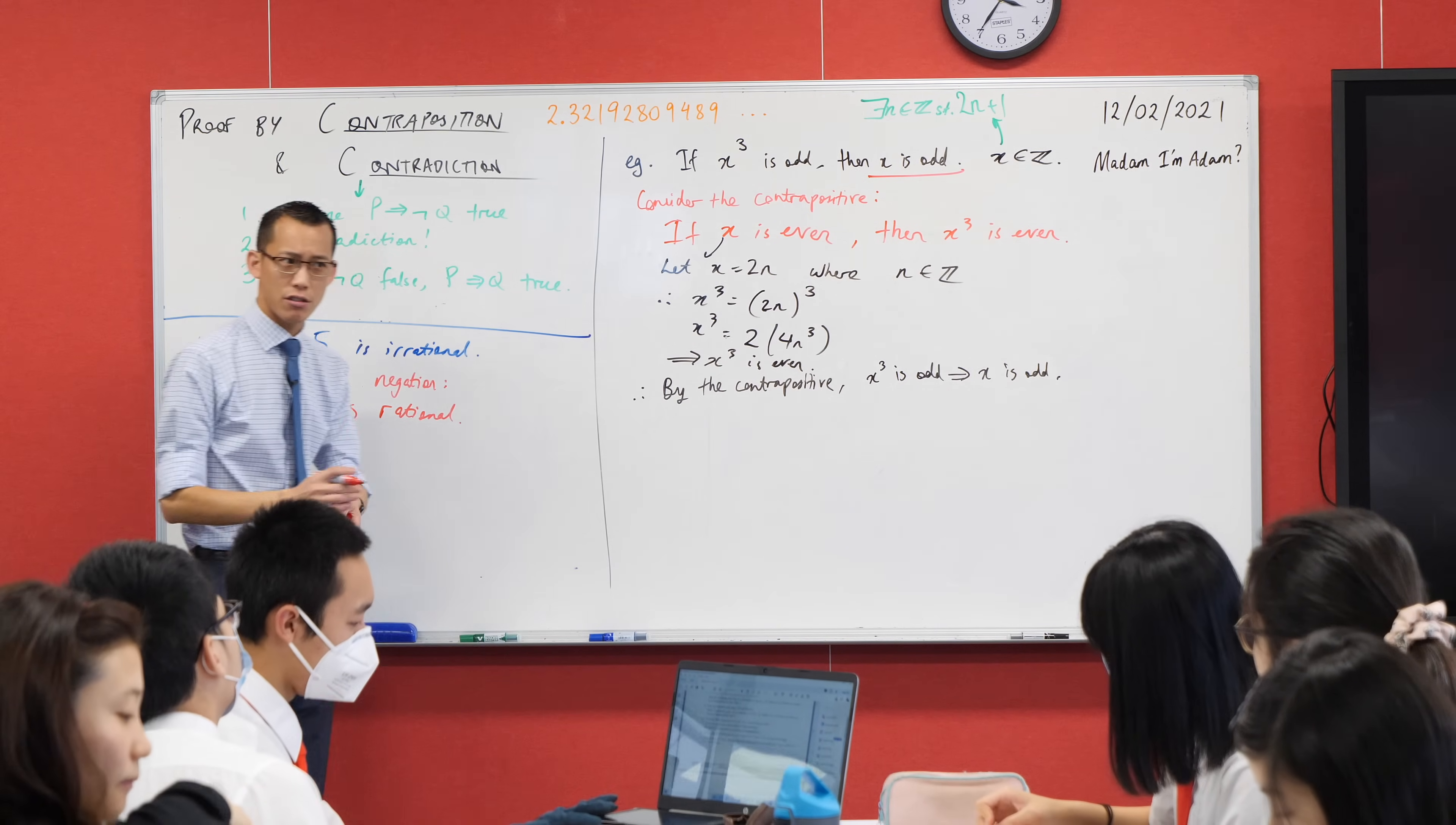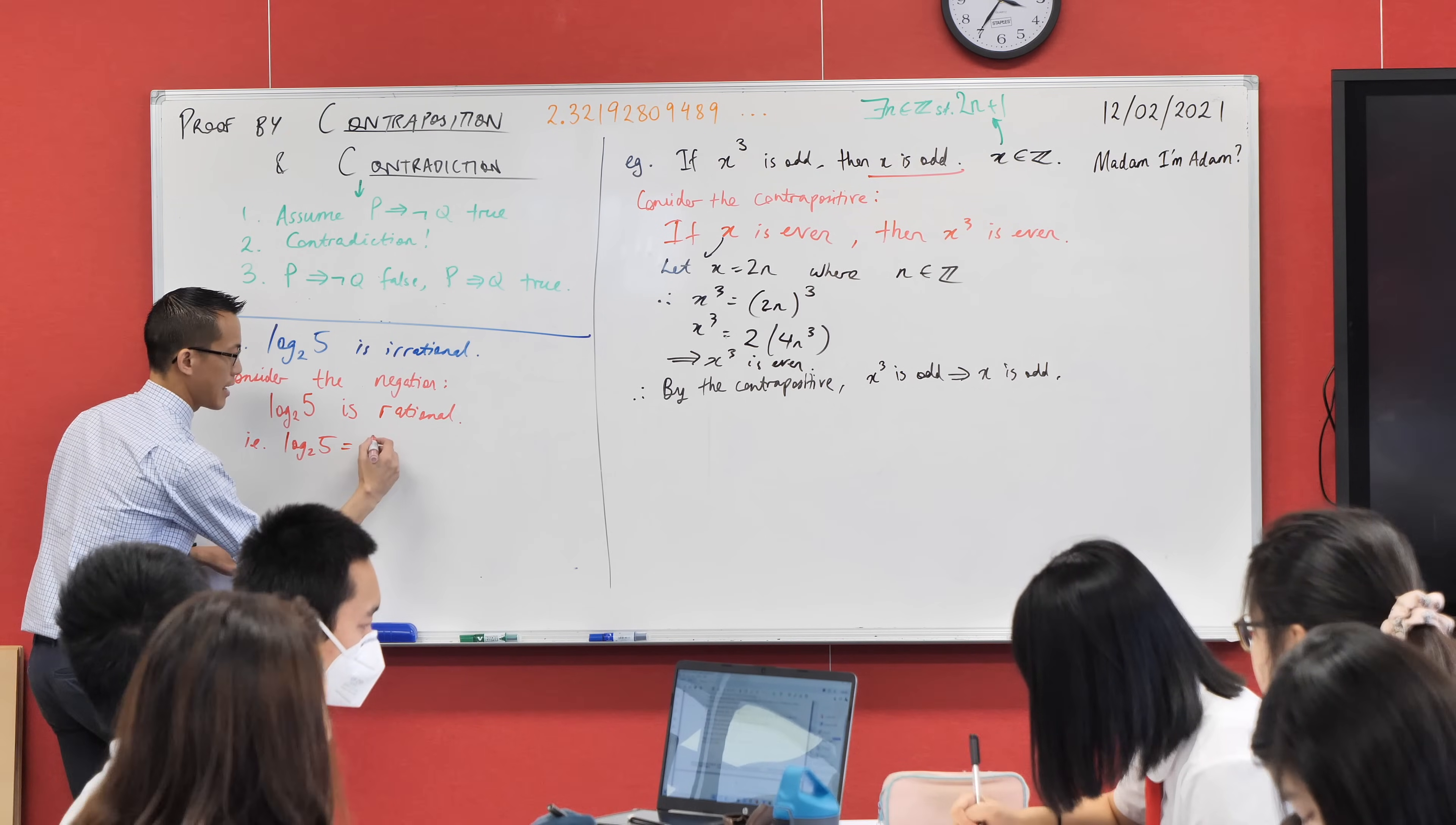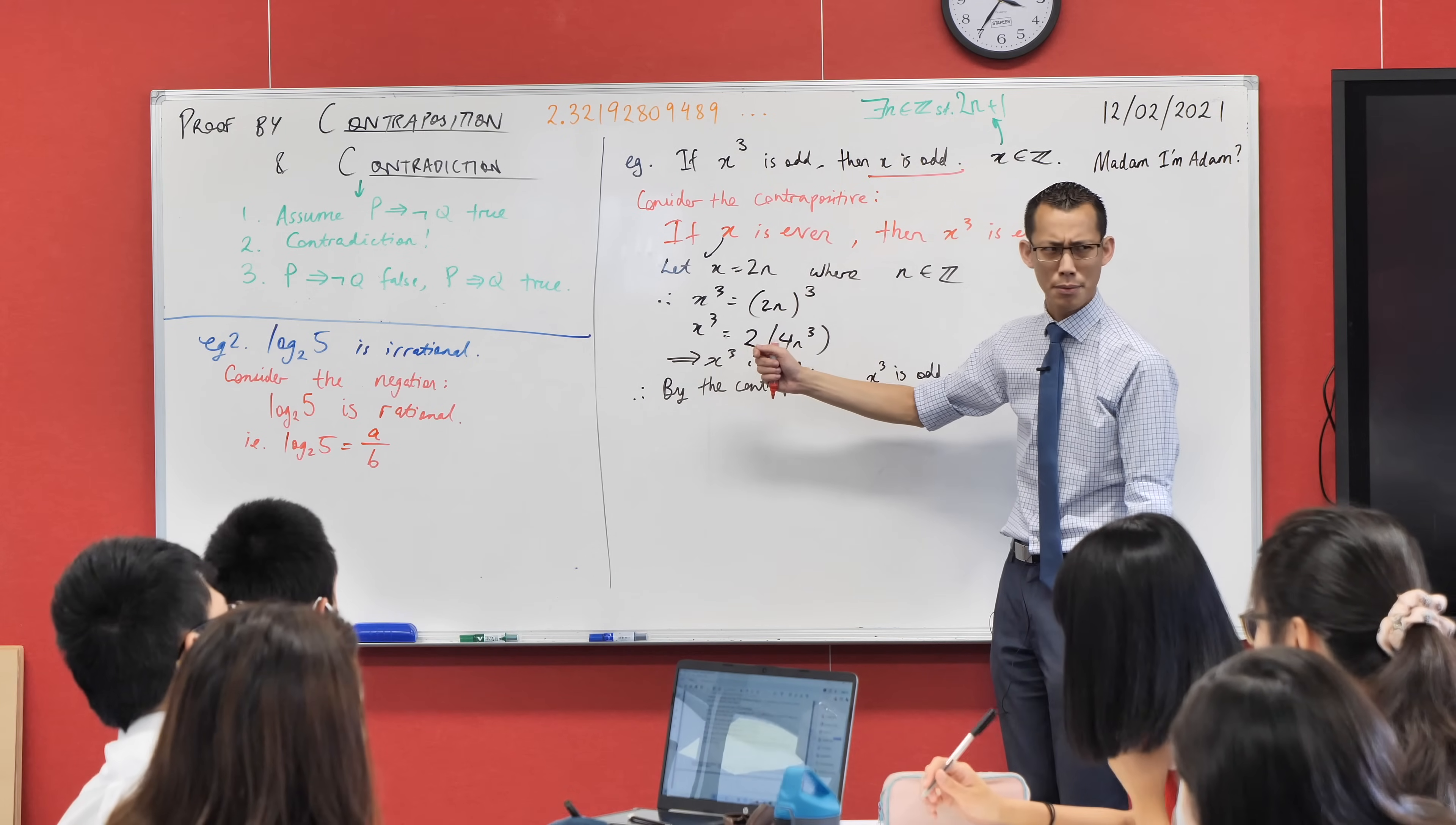So to be rational, I should be able to write this, log base 2 of 5, as a ratio between two integers. Do you agree with that? I should be able to say it's, for example, a over b. You might have used m and n, you might have used p and q, it doesn't matter. I do need to say what kinds of numbers a and b are.